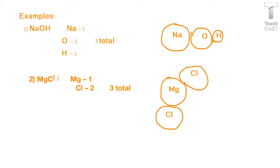But then I gave you a second example with magnesium chloride, and you'll know that chloride has a small number two. There's one atom of magnesium and two atoms of chlorine in every molecule for three total atoms.